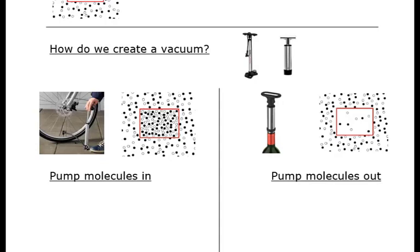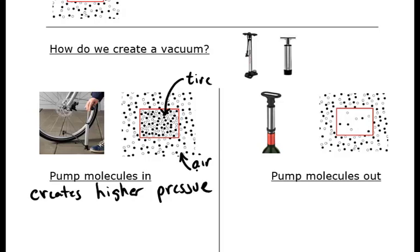When you use a bicycle pump, you attach it to your bicycle tire, and you start pumping molecules into the tire. If this box represents the inside of your tire, then actually the box has more molecules in it than the surrounding area. Here's your atmosphere around like in your garage, and here is the bicycle tire has more molecules. So this is just air. In this case, you're pumping molecules into a container. It creates a higher pressure. So this is not a vacuum.